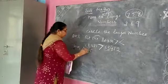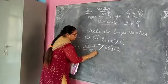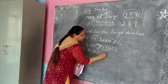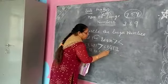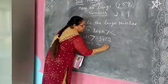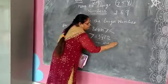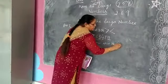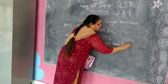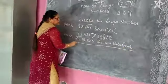Do sums 1 to 5 in your homework notebook. Okay guys, that's it.